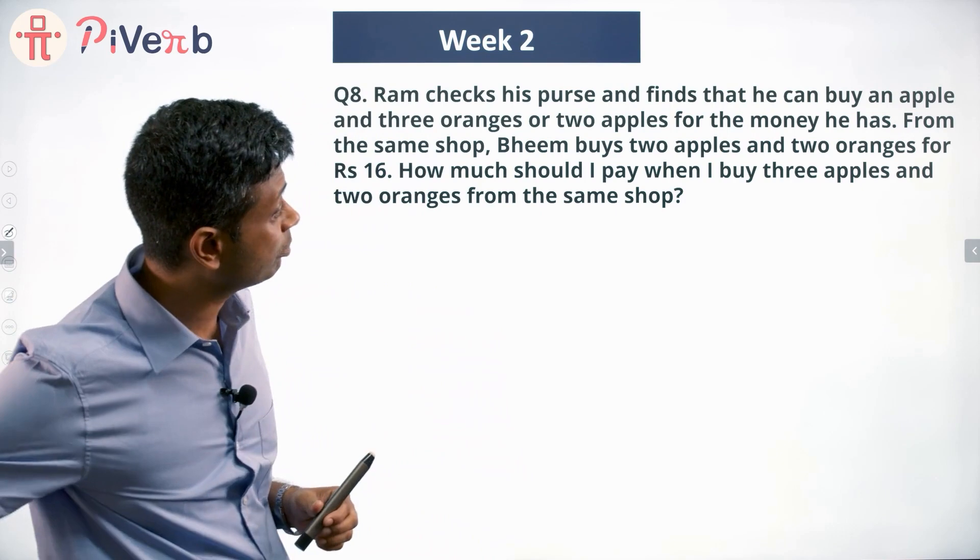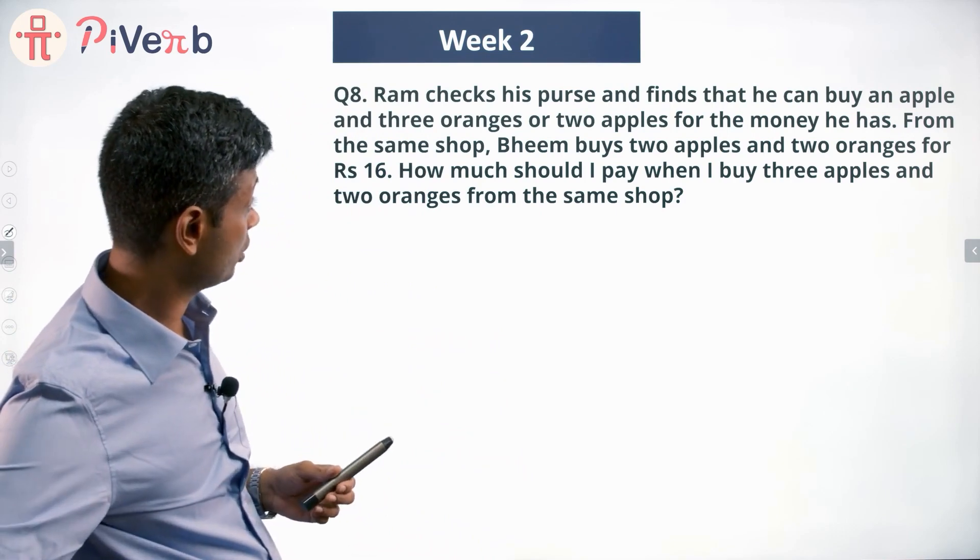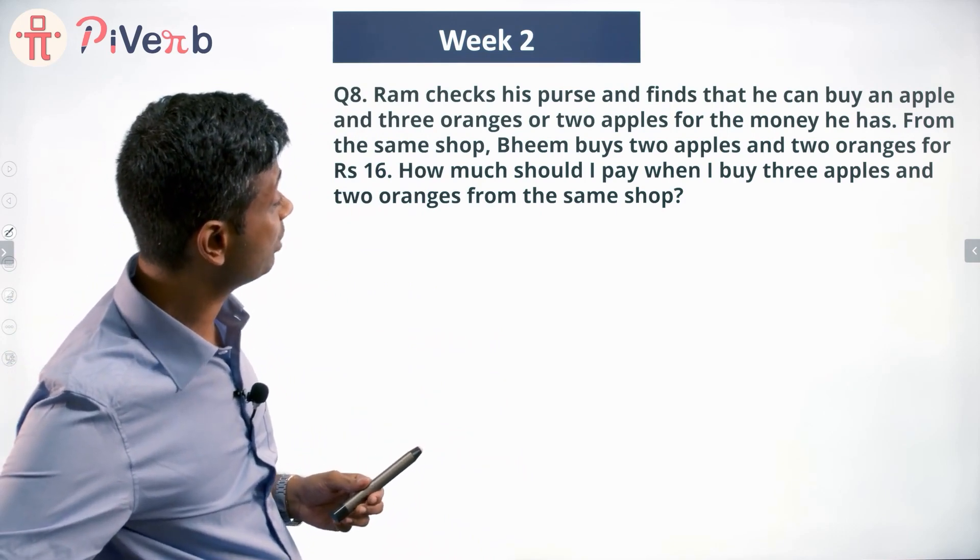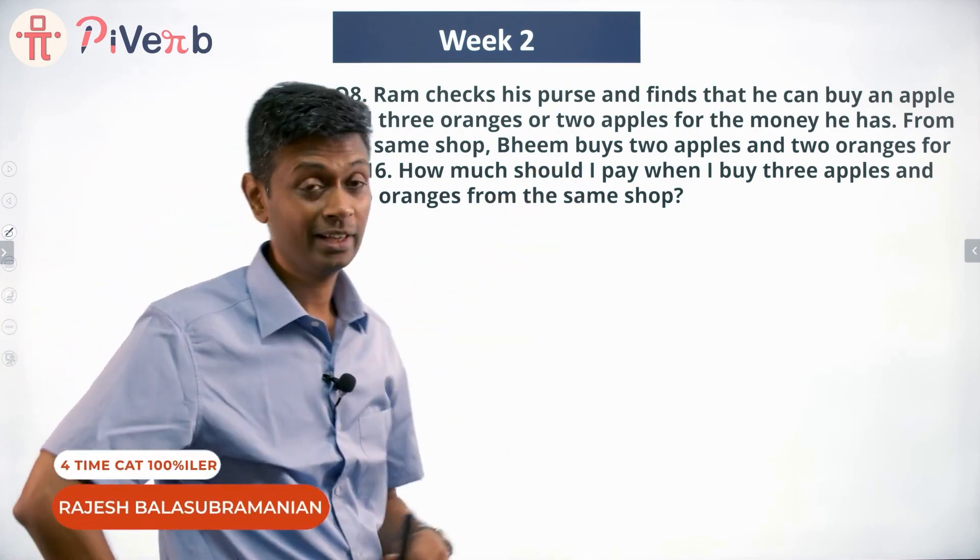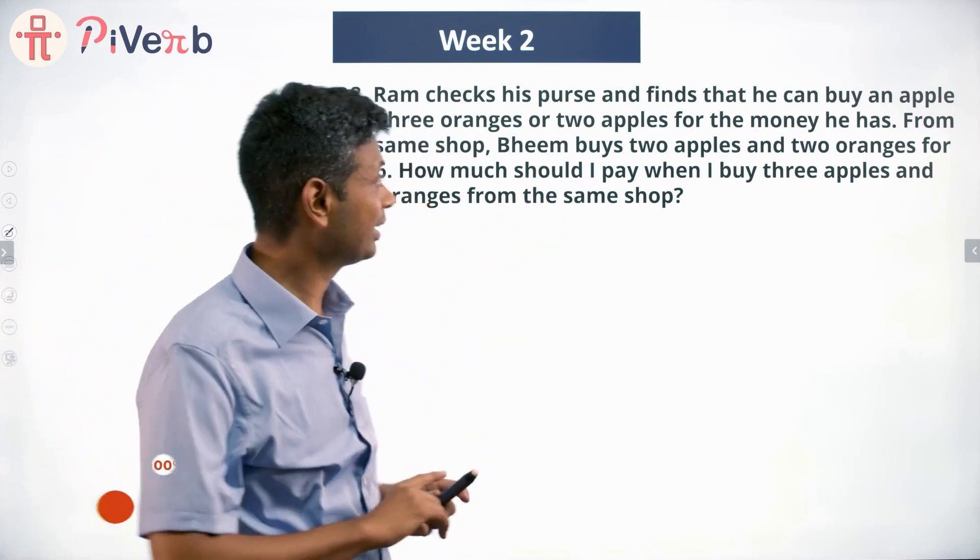Ram checks his purse and finds that he can buy an apple and three oranges or two apples for the money he has. Easy question - there have been oranges also here, I wouldn't have liked the question otherwise.